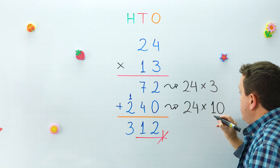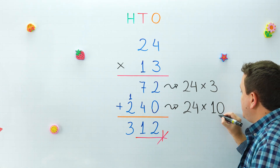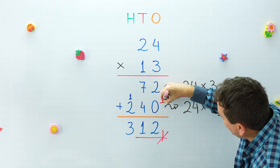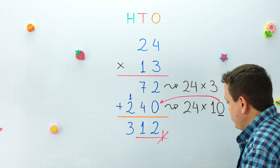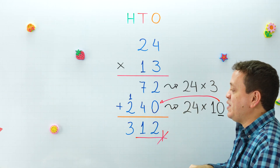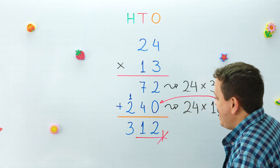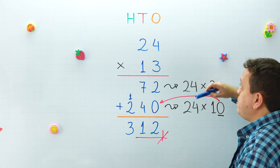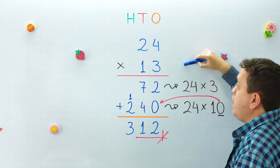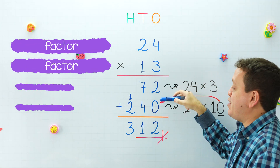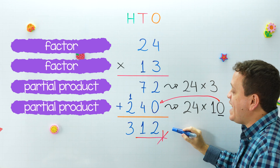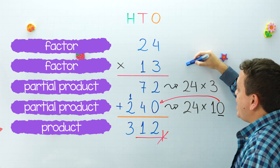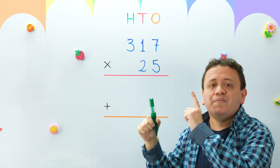We start the second line with a zero because we multiplied by a number that ends with zero — this zero moves from there to here. In the third step we add those two numbers together to get our final answer. And don't forget: the numbers being multiplied are called factors, the two intermediate results are called partial products, and the final answer is called the product.